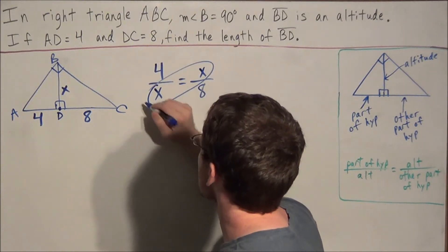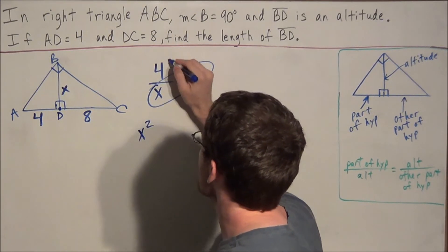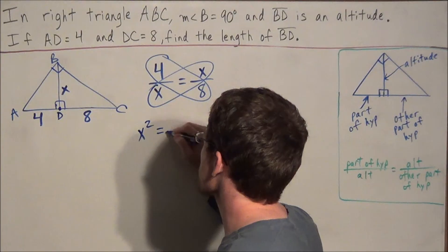So at this stage, all we need to do is cross multiply. So you have X times X is X squared. 4 times 8 equals 32.